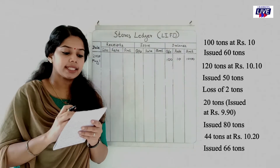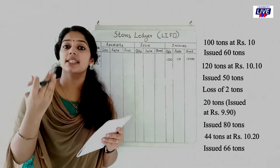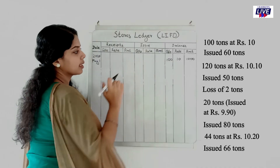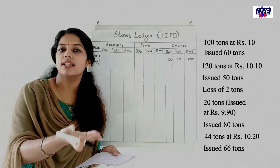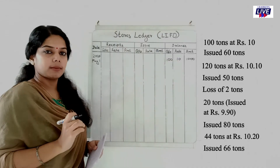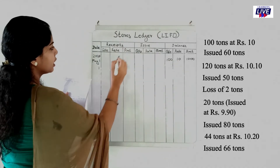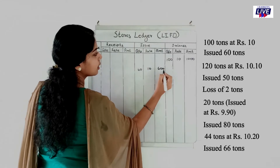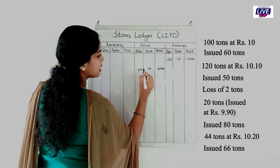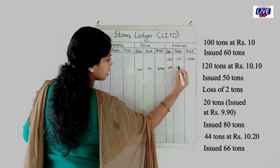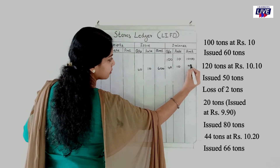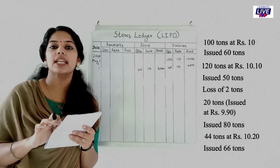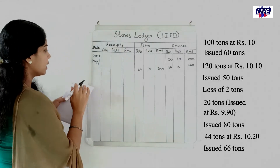First entry — issued 60 tons on May 1 at the rate of 10 rupees, amount 600. Balance: 100 minus 60 = 40 tons, rate 10 rupees, amount 400. Second entry — received 120 tons at 10 rupees 10 paise, amount 1212. Balance: 40 tons at 10 rupees (400) plus 120 tons at 10.10 (1212).